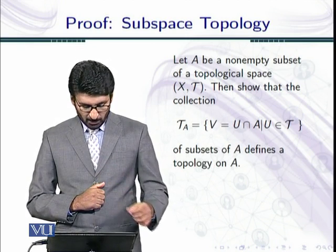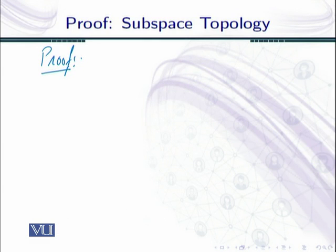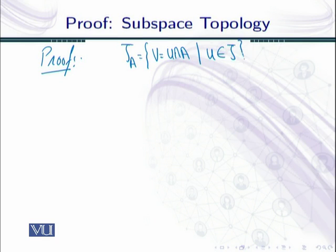Let us start our proof. First let me write τ_A: it is defined as {V = U∩A : U is an open subset of X}. This means that whenever I pick any element V from this collection, there exists some U such that taking the intersection of U with A gives us V.